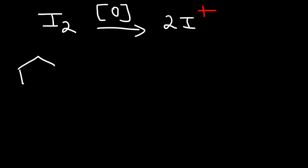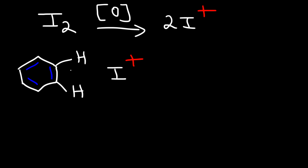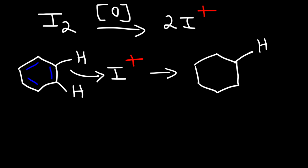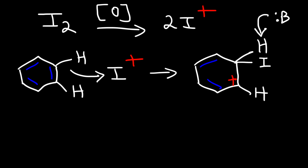Here is the general mechanism, which is very similar to the other mechanisms in this video. The benzene ring is going to behave as a nucleophile and react with this electrophile. I'm going to add the iodine atom to the same position, following the same process — we're going to have a positive charge on this carbon, so that's our carbocation intermediate. Then some base in the solution — it could be the solvent or something else — is going to take away that proton, and we're going to regenerate the aromatic ring, giving us iodobenzene.